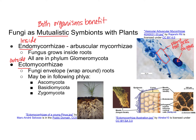Fungi that are ectomycorrhizae are found growing around the roots but not inside the actual cells. Ectomycorrhizae fungi can be associated with several phyla including Ascomycota, Basidiomycota, and Zygomycota. In the picture, the cells of the plant root are visible, and the bluish-purple structures are the hyphae of the fungus wrapped around the outside of the root. The hyphae also jut in between the cells of the root — they're not going into the cells but are going in between and around them.